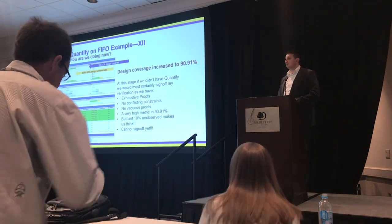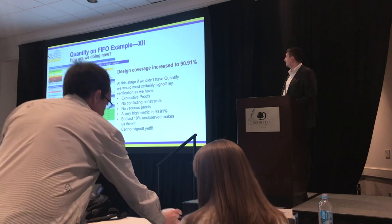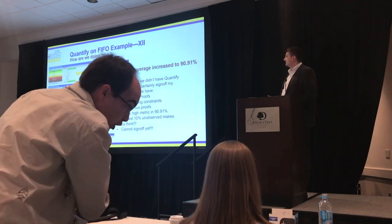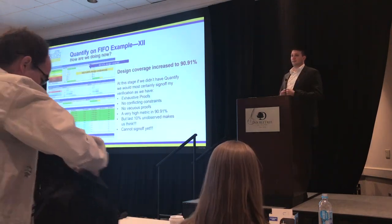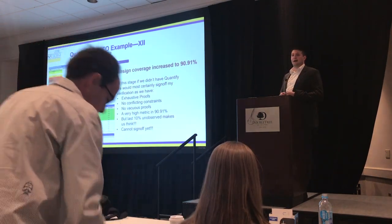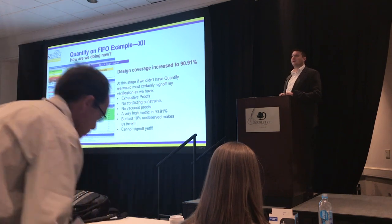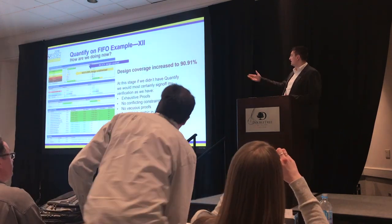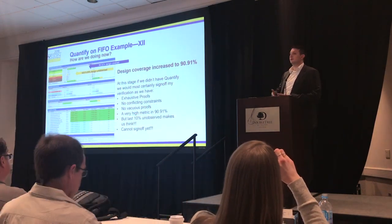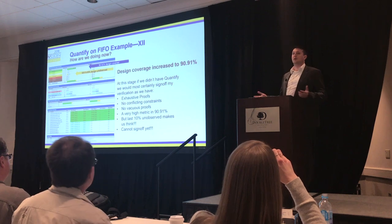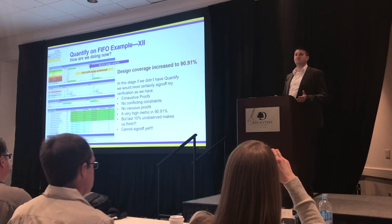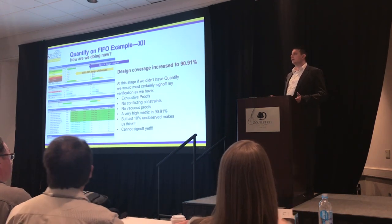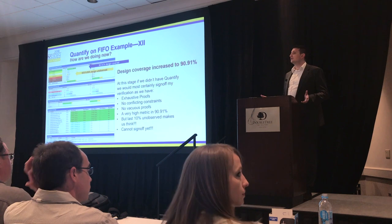Since we didn't talk about deadlock checks, we want to add some liveness checks saying that the write handshake and the read handshake will eventually happen. If we use liveness, we need fairness constraints saying they will happen at some point. When we add these checks, the design coverage is at 90%. At this stage, most people would say: 90%, all my checks are green, all proven against the design — I'm ready to sign off.